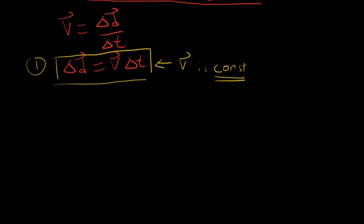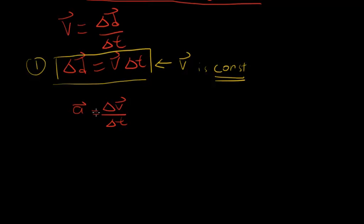Our second equation — we're going to use the acceleration equation to help us derive it. You should all be familiar with: acceleration equals delta v, the change in velocity, over the change in time — how fast was the velocity changing. We talked about this in the previous video. So what can we do here? Well, we can change the top part, change in v, into something else.